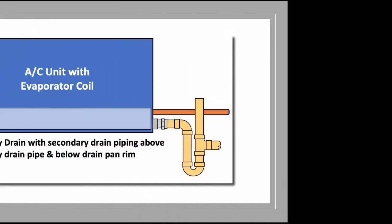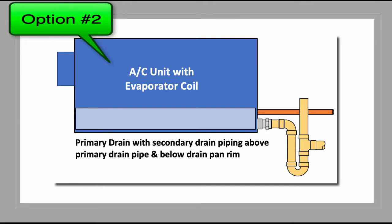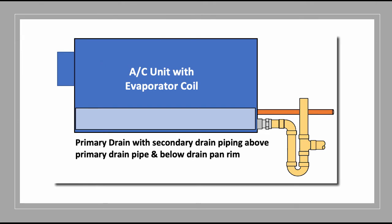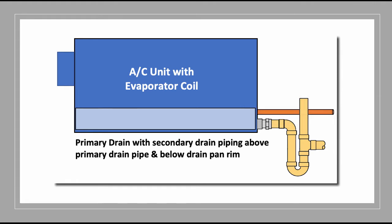Option two: you can use a secondary drain pipe on the primary drain, locating that secondary drain pipe above the primary drain location and below the lip of the top of the drain pan. Once again, you would locate that secondary drain piping to terminate in an observable location so that if the primary drain got clogged, it would indicate to the tenants of such condition.